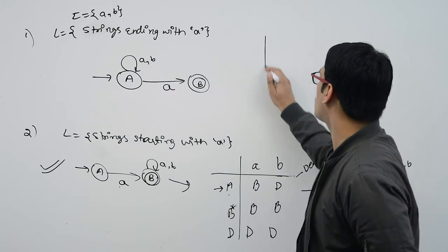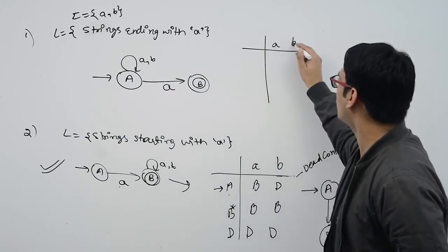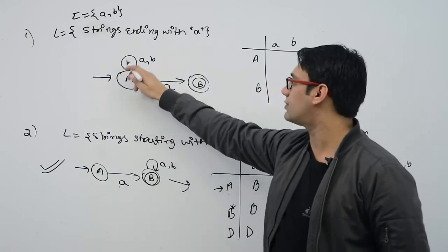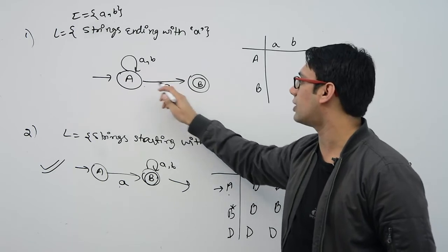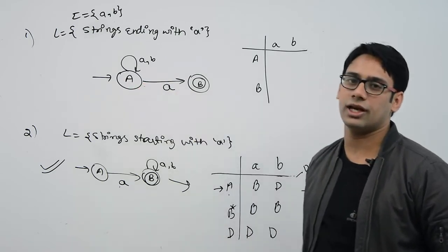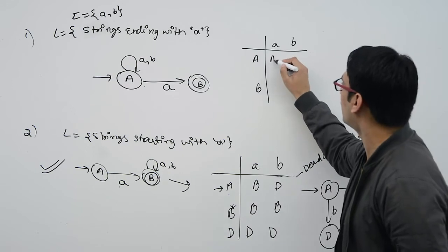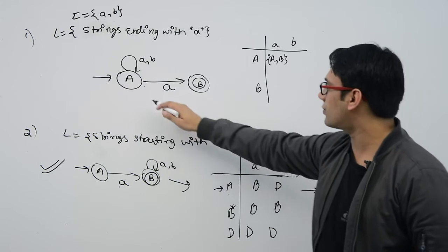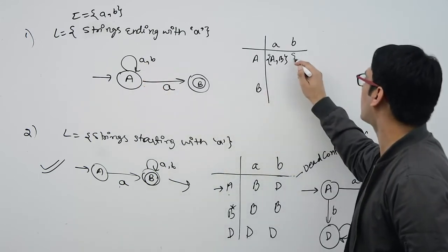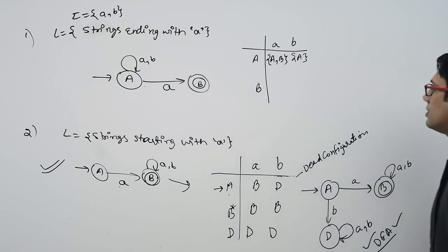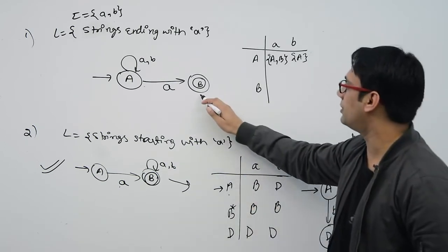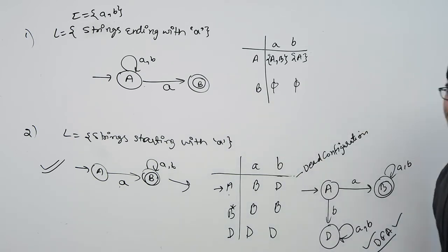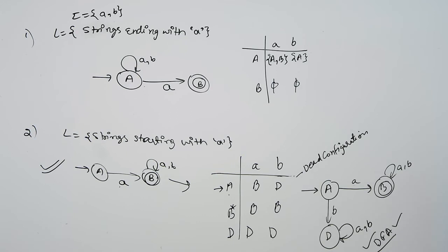Now consider the second diagram — strings ending with 'a' — which is also an NFA. Here we make the transition table. We have states A and B, and symbols 'a' and 'b'. In state A, if you see symbol 'a', you go to both state A and state B. In state A, if you see symbol 'b', you go exactly to state A itself. In state B, if you see 'a' or 'b', you go to Phi.